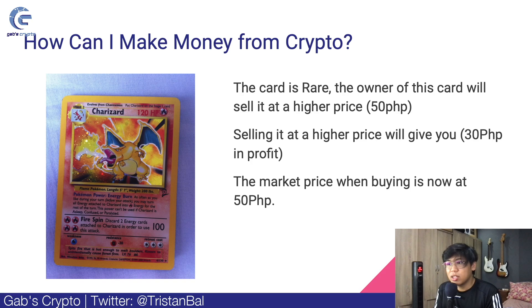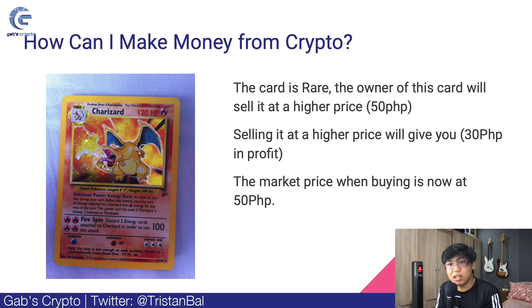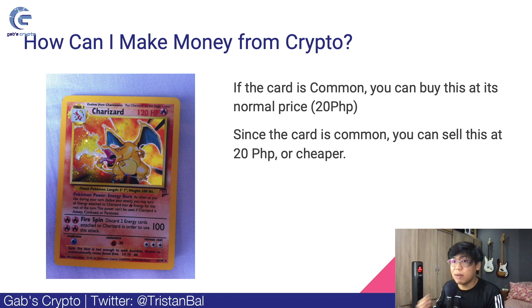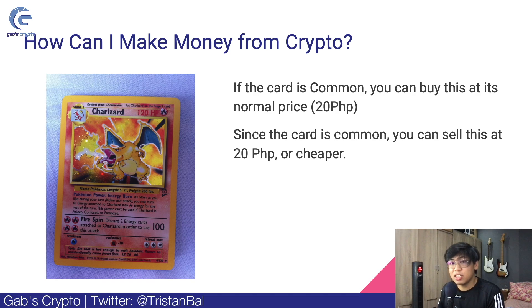So basically, trading means you buy an asset at a very low price and sell it when the price goes up. And then, let's say it becomes common again — you can now buy 2 more Charizard cards with your 50 pesos, since the original price is 20 pesos each. You can buy two of them. Then if the price goes up again to 50 pesos each, selling both gives you 100 pesos. You can see that in trading, you're making more money by buying at a cheap rate and selling at a higher rate.